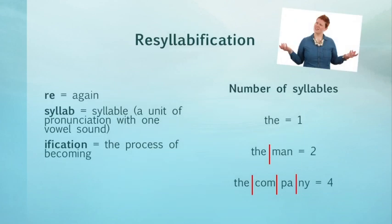It's due to a feature of connected speech called re-syllabification. To break down this long word: 're' means again, and 'syllab' is for syllable, which is a unit of pronunciation with one vowel sound. For example, 'just' has one syllable — just one vowel sound. And 'the man' has two words with two vowel sounds, giving us two syllables.